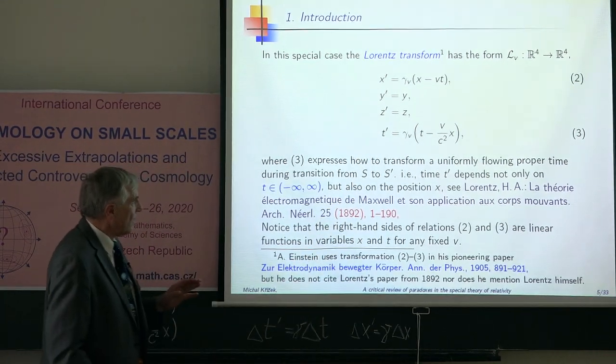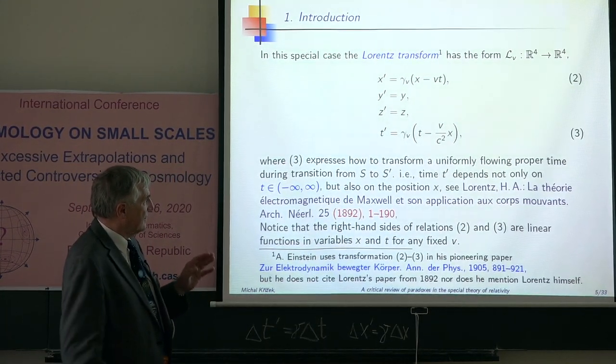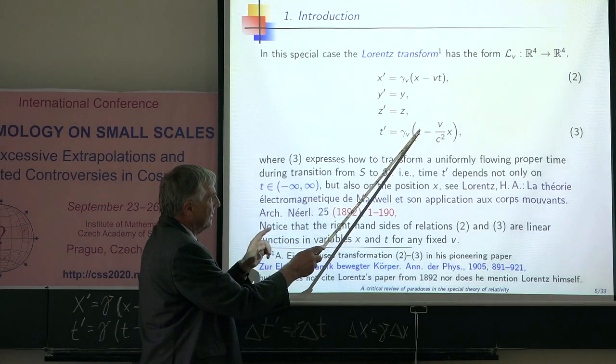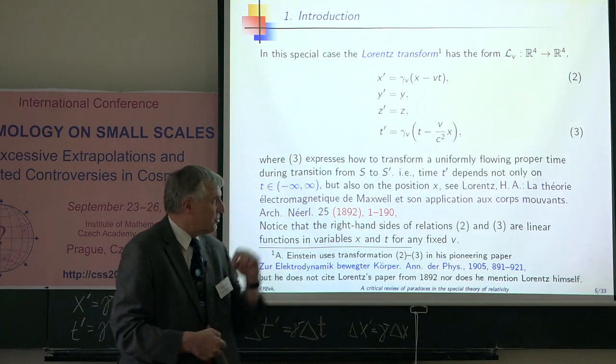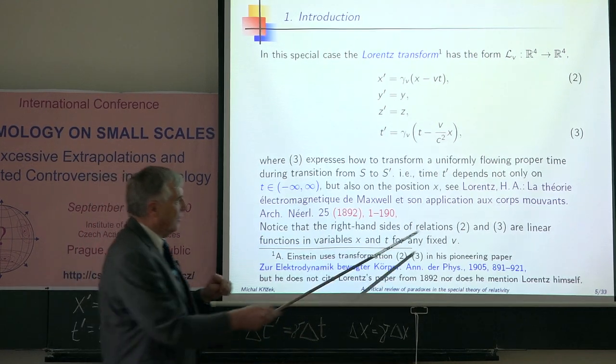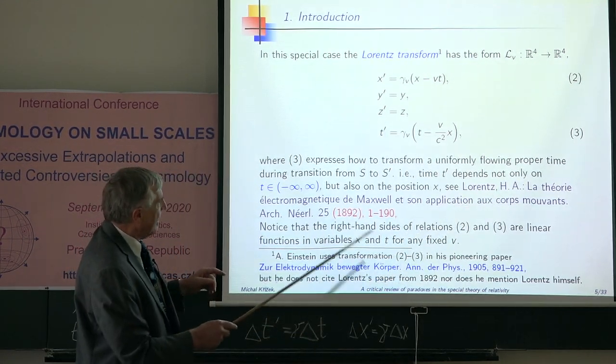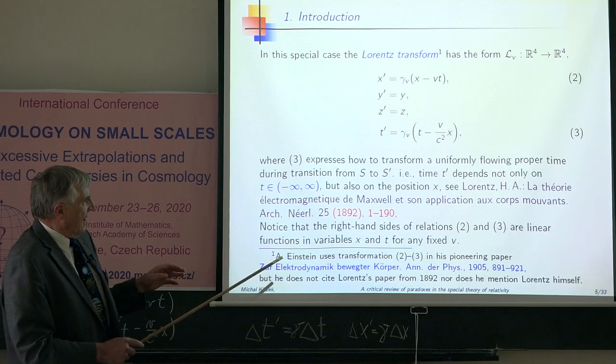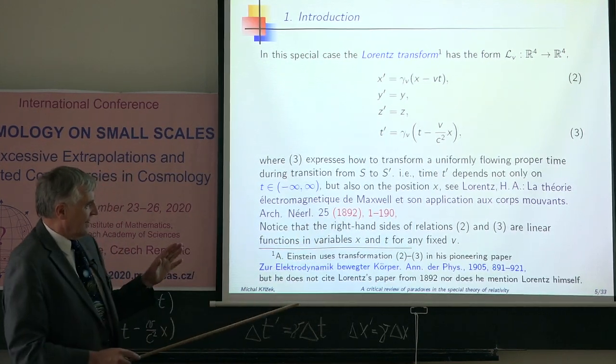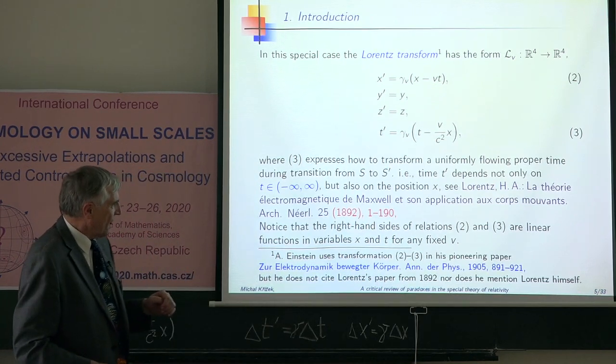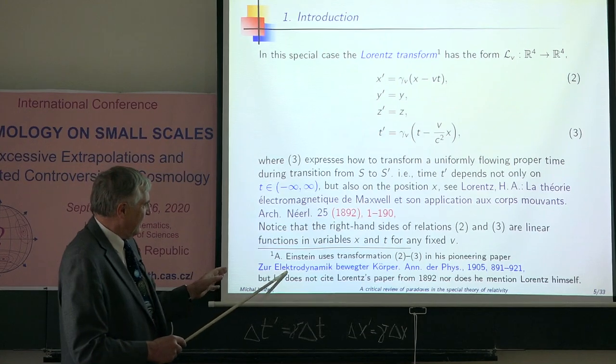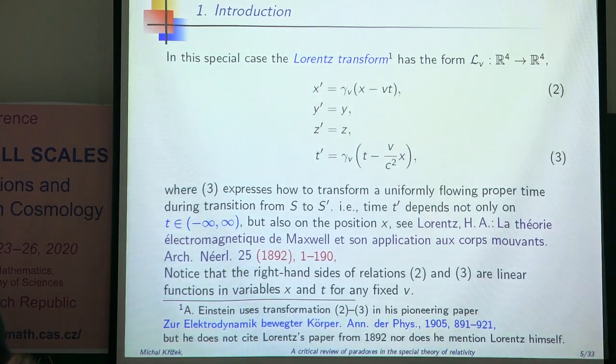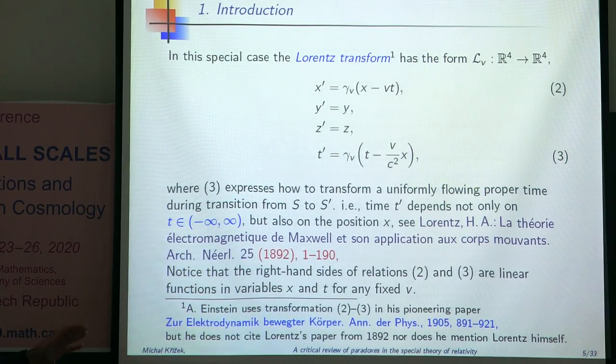First observation that the time may depend not only on t but also on x, on the position, was already found by Lorentz in this paper, La Theorie Electromagnetique de Maxwell et son application. It was published much earlier than Einstein. It has almost 200 pages. Einstein, in his very famous paper which has almost the same title, does not quote Lorentz. It is interesting.